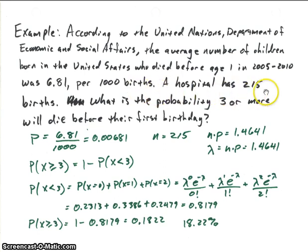All right, so let's suppose we have a hospital that has 215 births that occur over, it doesn't really matter what period of time. Because we're going to look at what is the probability that three or more of those children will die before their first birthday. So each of them we're dealing with one year.